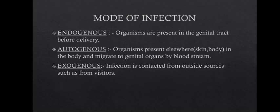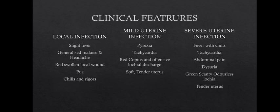The clinical features of puerperal sepsis are divided into local infection features and uterine infection features, which are further divided into mild and severe uterine infection. In local infection, the patient may experience slight fever, generalized malaise, headache; the local infected part will be red and swollen, pus discharge from the wound may be seen, and the patient may experience chills and rigors. In mild uterine infection, there is pyrexia, tachycardia, and local discharge that is red, copious, and offensive.